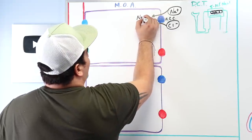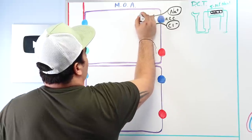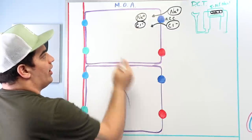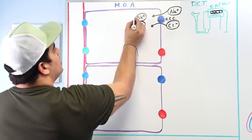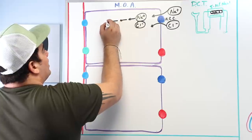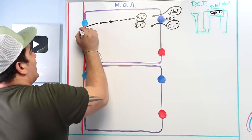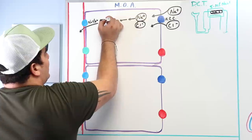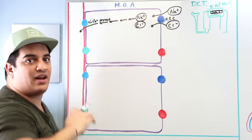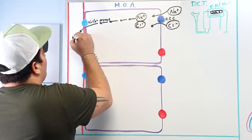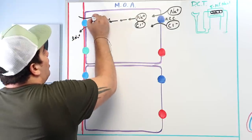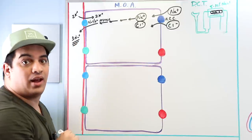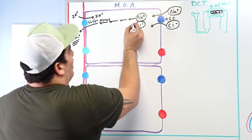Once sodium and chloride enter the cell, the goal is to get sodium into the blood. Sodium exits the cell via the sodium-potassium ATPase, a prominent pump found in every cell. It pumps out three sodium ions and pumps in two potassium ions, moving sodium out into the peritubular capillary blood.